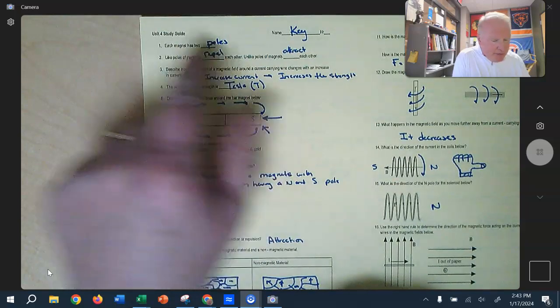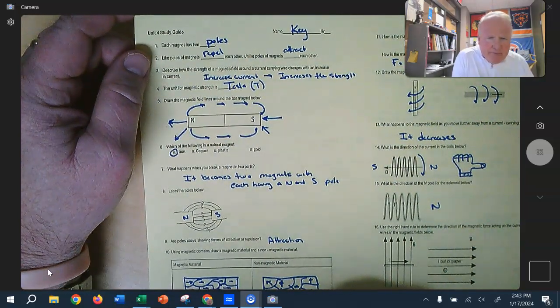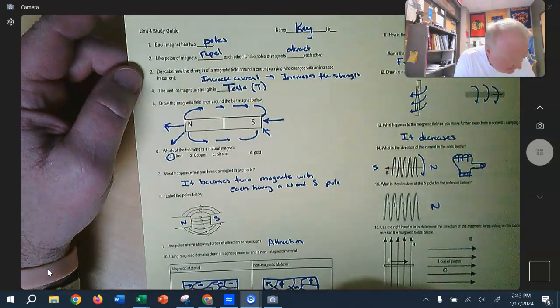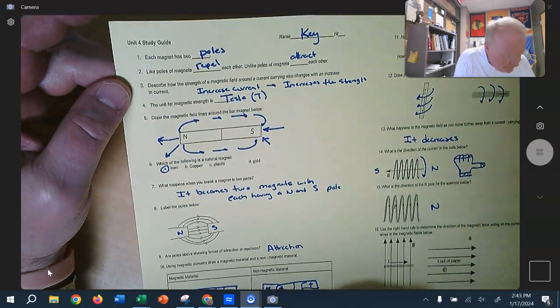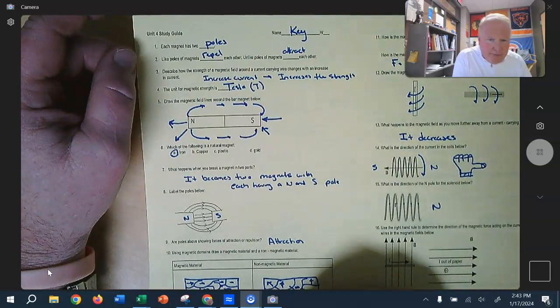Some of these are pretty clear. So certainly we got all magnets have poles, like will repel, opposites attract. Describe the strength of the magnet. So if you increase the current, you're going to increase the strength of the magnetic field.